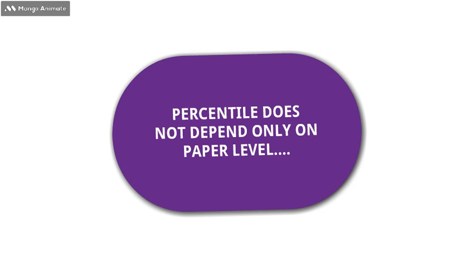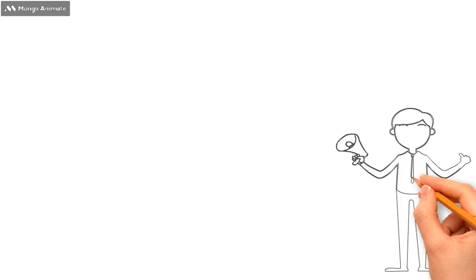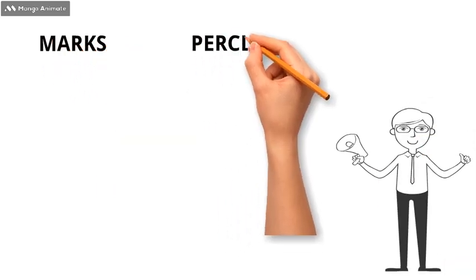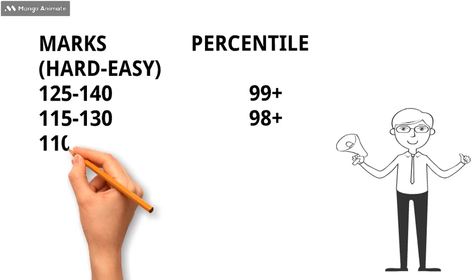So the best thing is we can divide the percentile into some range of marks, and then we can easily analyze our expected percentile. So this year, we can expect the range of marks for 99+ percentile to be between 125 to 140.